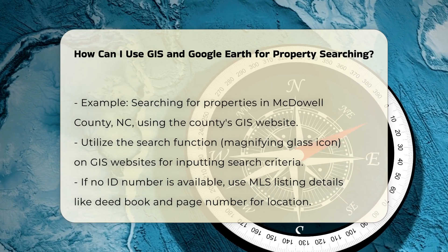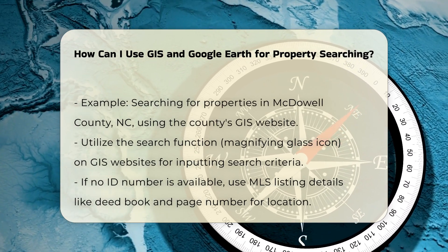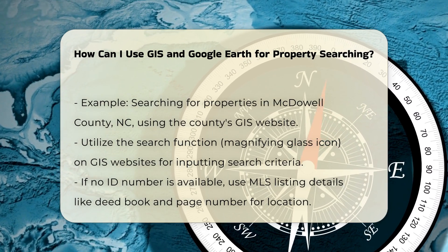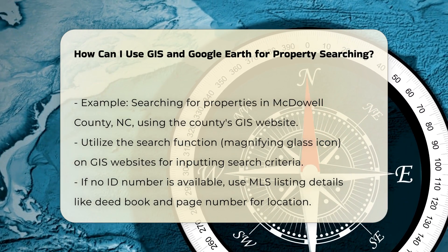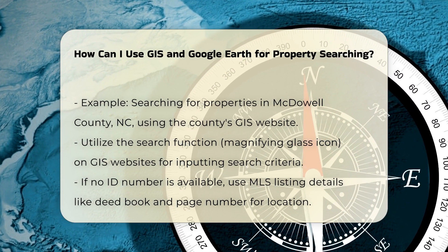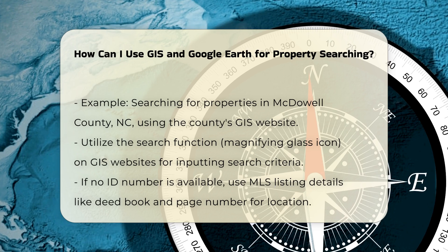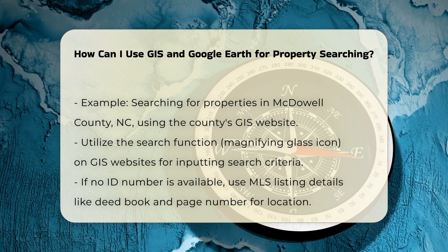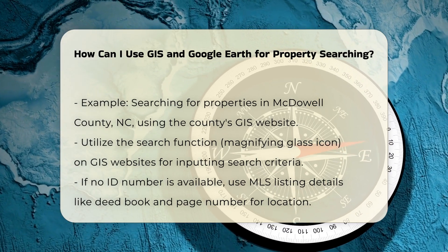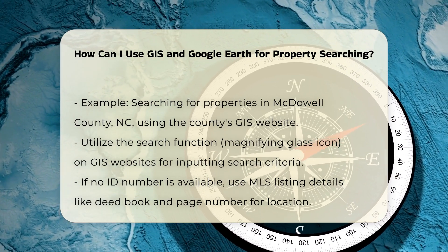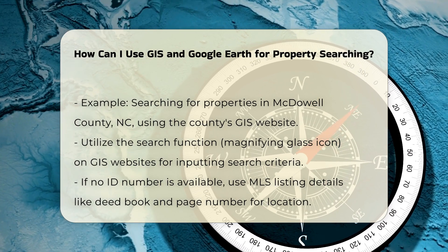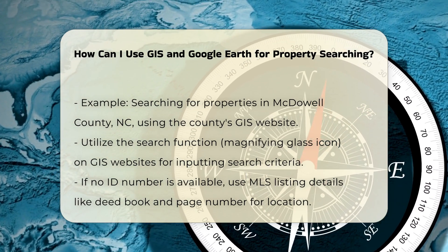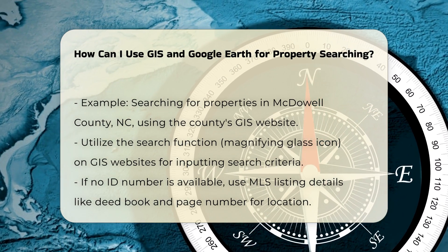Navigating GIS systems. If the property does not have an easily identifiable ID number, you can use other details from the MLS listing, such as the deed book and page number, or follow the directions provided in the listing to locate the property on the GIS map. For instance, if the directions say to take a specific route and turn onto a particular road, you can use the measure tool in the GIS system to measure the distance and pinpoint the property's location.